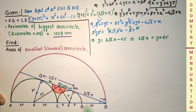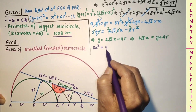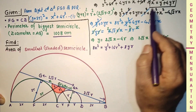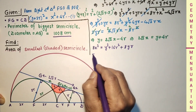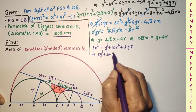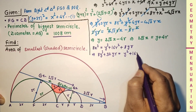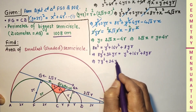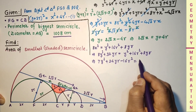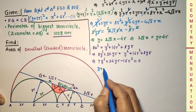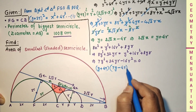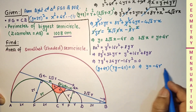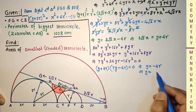Squaring both sides: 8x² = (y + 4r)² = y² + 16r² + 8yr. Substituting x² = y² + 4yr: 8(y² + 4yr) = y² + 16r² + 8yr, so 8y² + 32yr = y² + 16r² + 8yr. Simplifying: 7y² + 24yr − 16r² = 0. Factoring: (y + 4r)(7y − 4r) = 0. So y = −4r (not acceptable, as it is negative) or y = 4r/7.